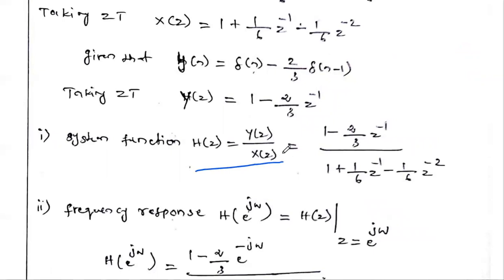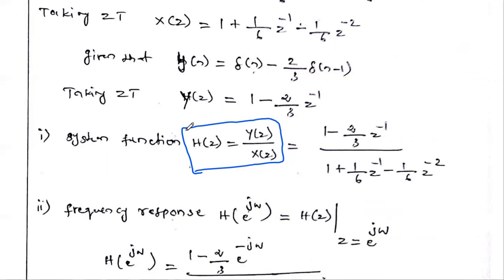In order to find H(z), we have to find X(z) and Y(z). Since x(n) is given, we have to convert this time-domain input into the Z-domain. That's why we take the Z-transform.